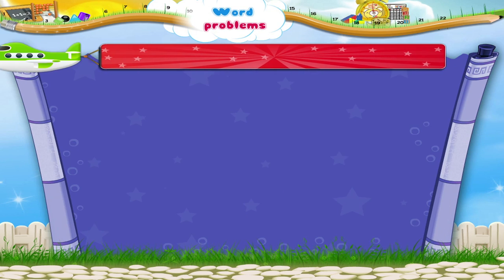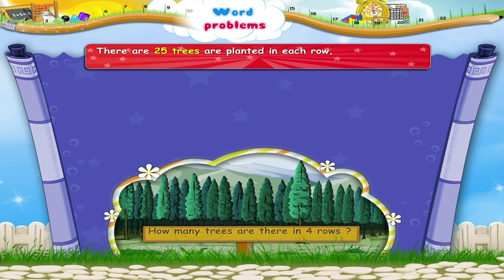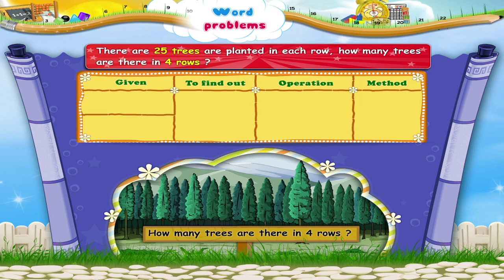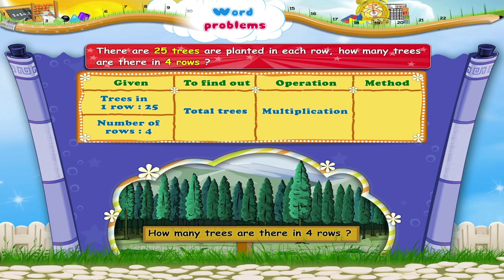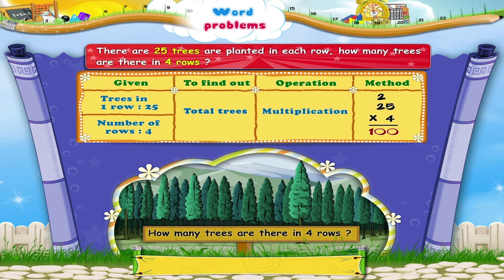Let us now revise what we have studied. If 25 trees are planted in each row, how many trees are there in 4 rows? This means that we are given the number of trees in each row, which is 25, and the number of rows is 4. The number of trees in each row, 25, is multiplied with the number of rows, 4. There are 100 trees in 4 rows.